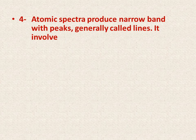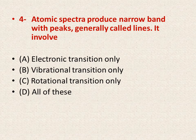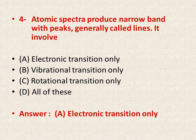Question number four: atomic spectra produce narrow band peaks generally called lines. It involves — options: A is electronic transitions only, B is vibrational transitions only, C is rotational transitions only. The right answer is A — it involves electronic transitions only.